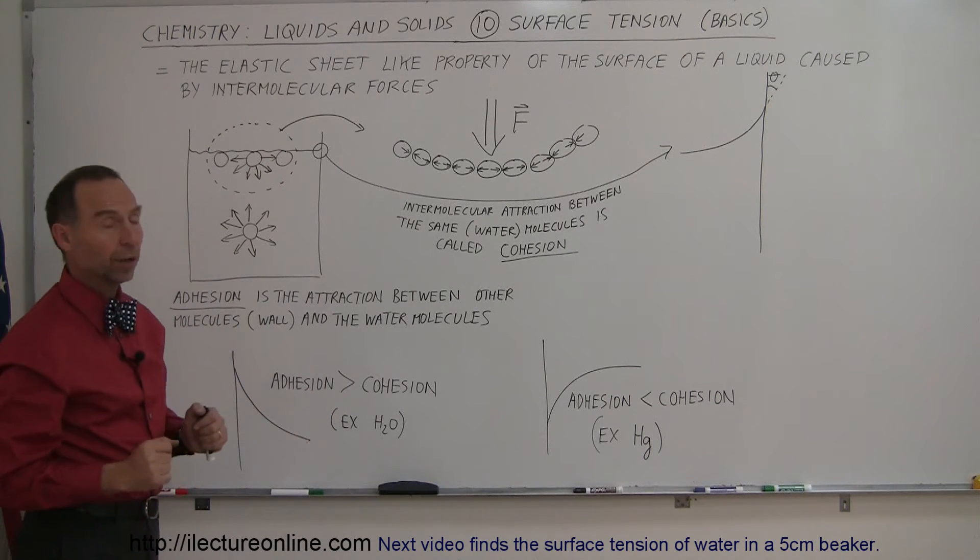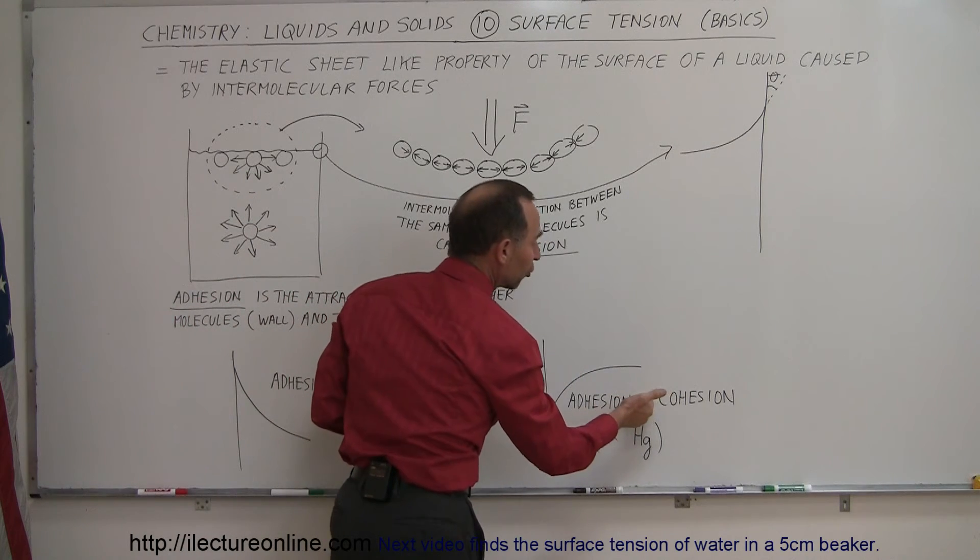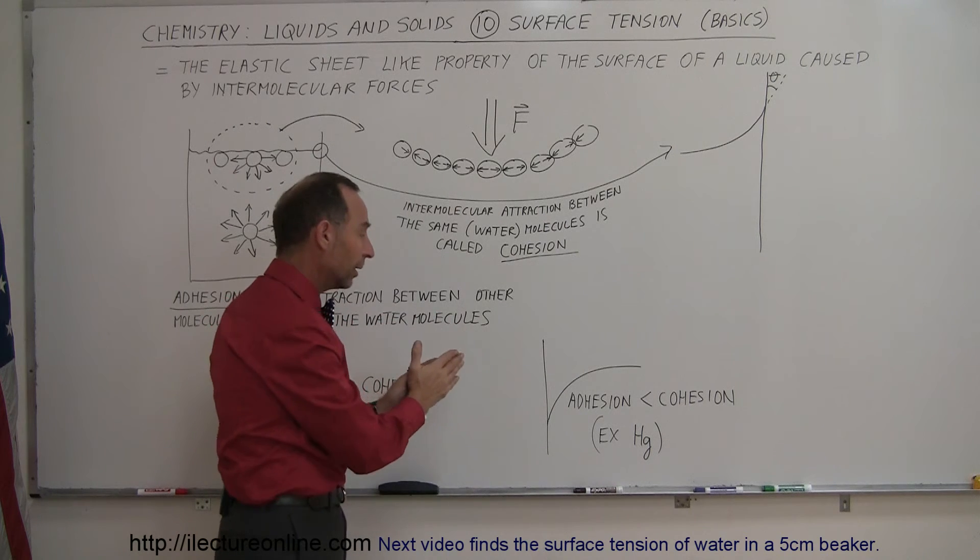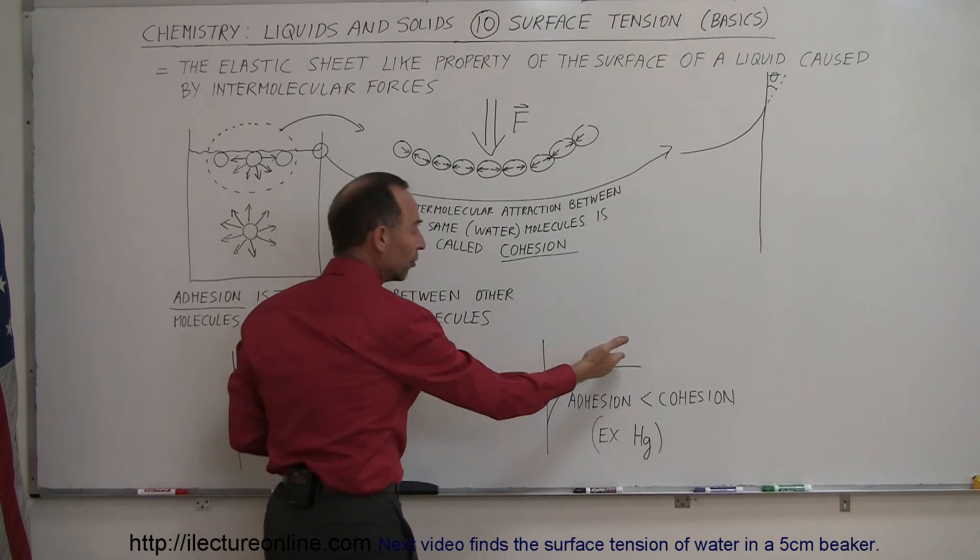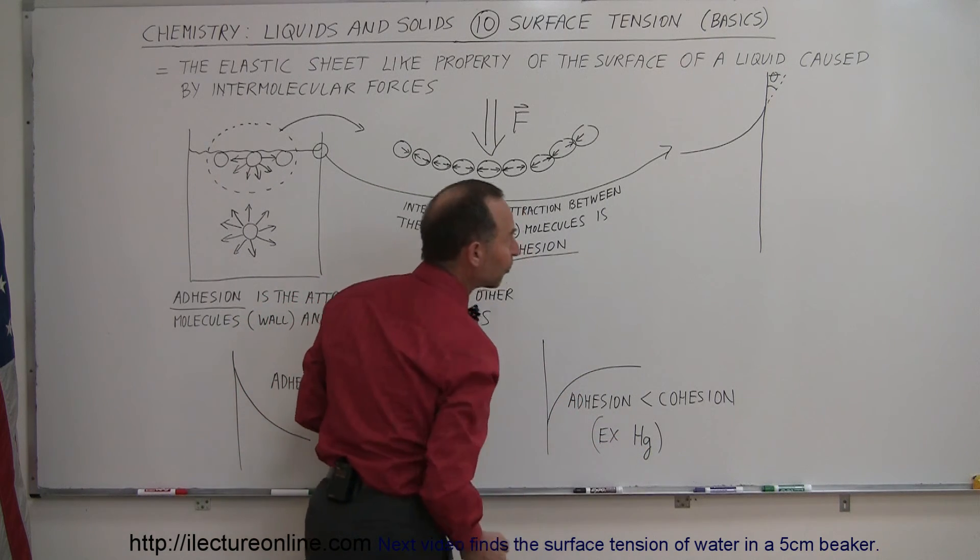That happens with water. On the other hand, if the adhesion forces are smaller than the cohesion forces—if the force between the liquid and the wall is less than the forces between the liquid molecules—you'll see the liquid bending away from it, which happens with mercury.